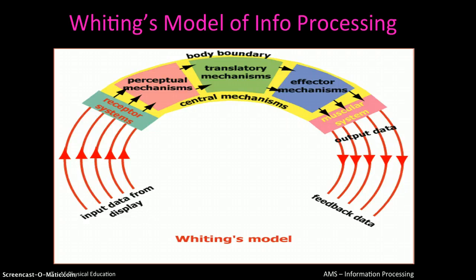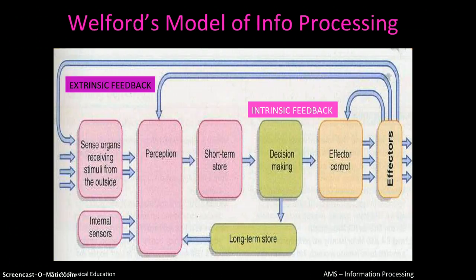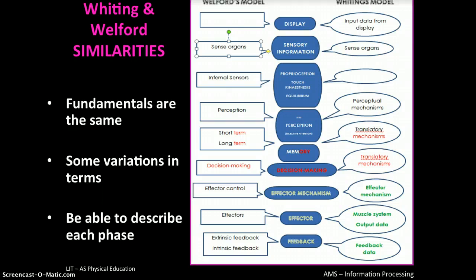Whiting's model of information processing covers everything just discussed but uses different terminology — for example, 'receptor systems' corresponds to sensory input. You need to recognize, apply, and draw this model. Similarly, Welford's model covers the same process using different phrases. A comparison diagram shows the key components in the centre with Welford's language on the left and Whiting's on the right, demonstrating that different language is used but the key components apply to both models.